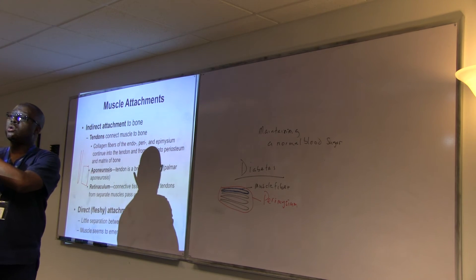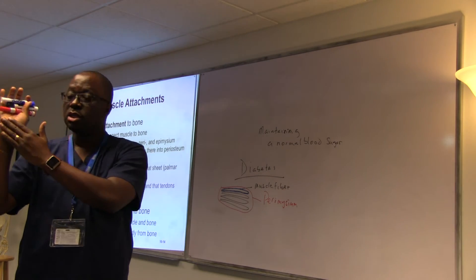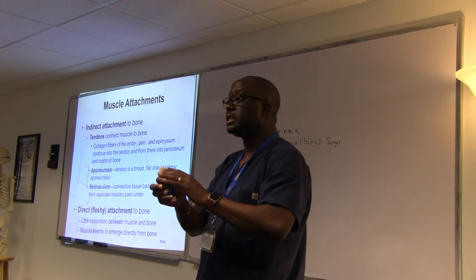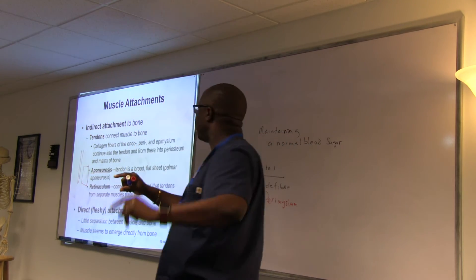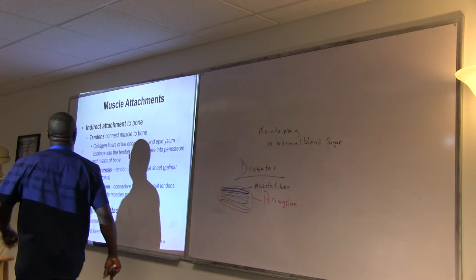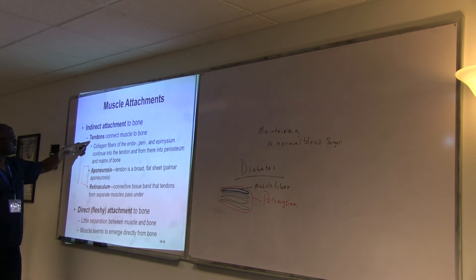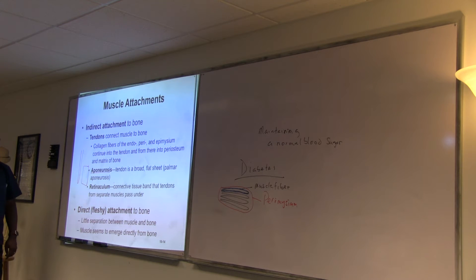It's flat and broad. An example of that is a tendon that we have on the palm, that we call it palmar aponeurosis. So anytime you hear aponeurosis, it is broad and flat. But the conventional one is the tendons, which is almost like directly to the muscles. But aponeurosis, it is broad and flat.